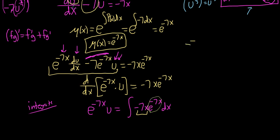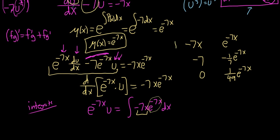For tabular integration, write the term to differentiate (−7x) and the term to integrate (e^(−7x)). Differentiate: −7x → −7 → 0. Integrate: e^(−7x) → (−1/7)e^(−7x) → (1/49)e^(−7x). Assign alternating signs (+, −, +) and draw diagonal arrows. Follow the arrows to form the products.